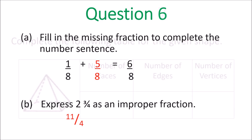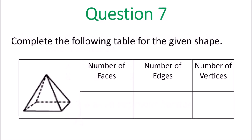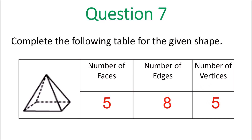Move on to question 7: complete the following table for the given shape. Number of faces — count the flat surfaces: 1, 2, 3, 4, 5 — yes, 5 faces. Number of edges — count the lines: 1, 2, 3, 4, then 1, 2, 3, 4 — that's 8 edges. Number of vertices — one at the top, then four at the bottom: four and one is five — 5 vertices.